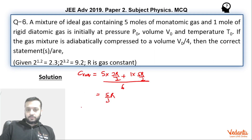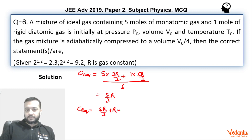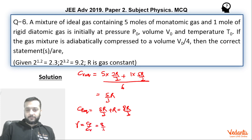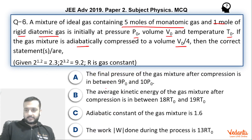Cp equivalent will be nothing but Cv + R, so that will be 5R/3 + R, which becomes 8R/3. Hence gamma = Cp/Cv = 8/5 = 1.6, and hence this is the correct option.